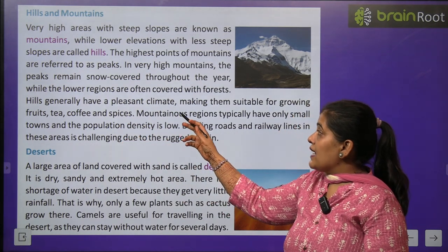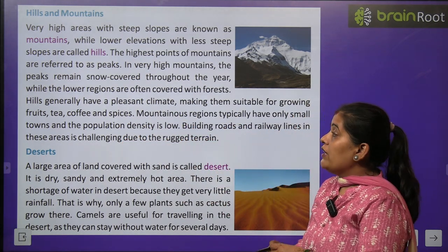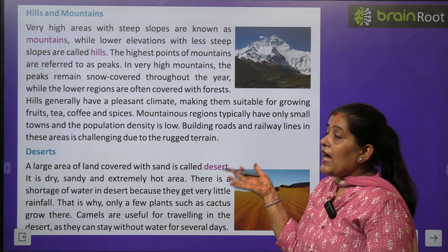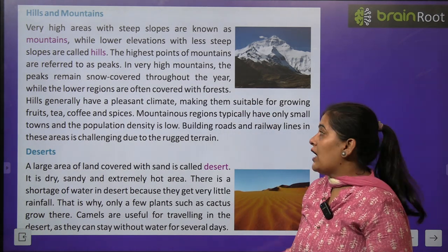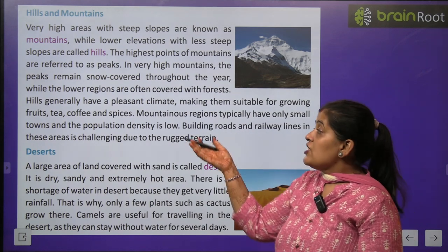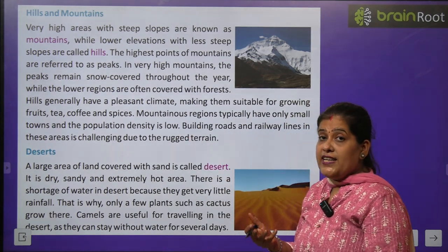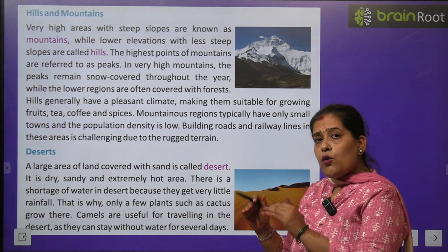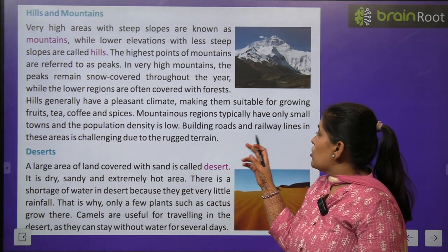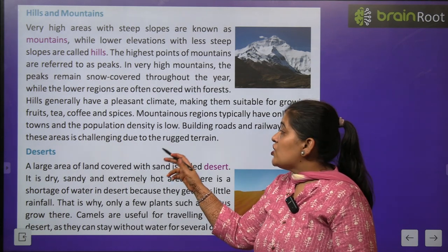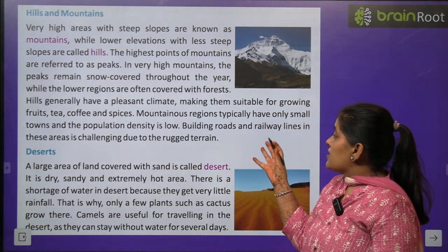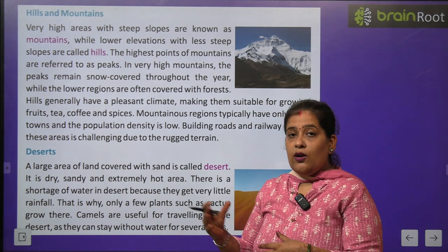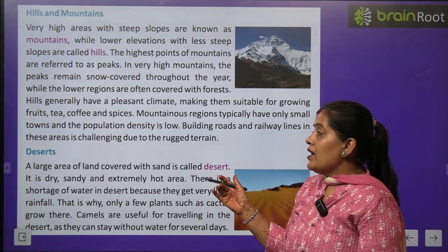Hills generally have a pleasant climate, making them suitable for growing fruit, tea, coffee and spices. Hills ka generally climate bahut pleasant hota hai — fruits, chai, coffee aur masalon ki krishi ke liye achha hota hai. Mountain regions typically have only small towns. Building roads and railway lines in this area is challenging due to the rugged terrain — yahan par sadken aur railway lines ka hona bahut mushkil hai kyunki pahadi ilaka hai.